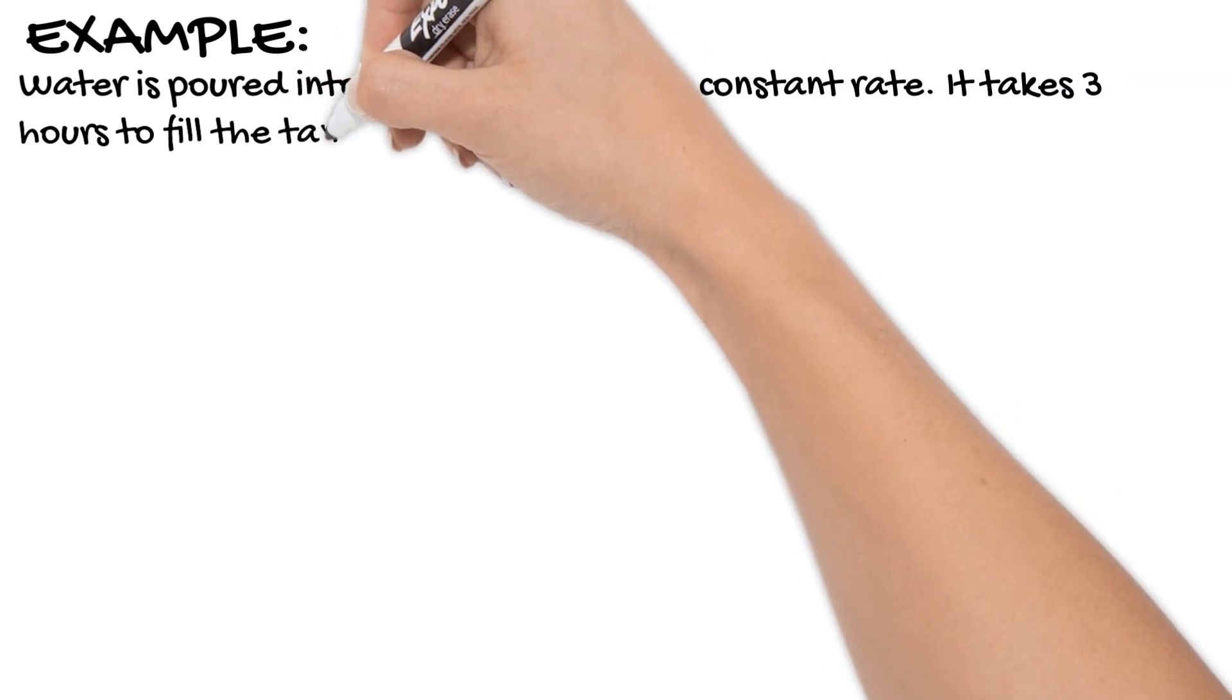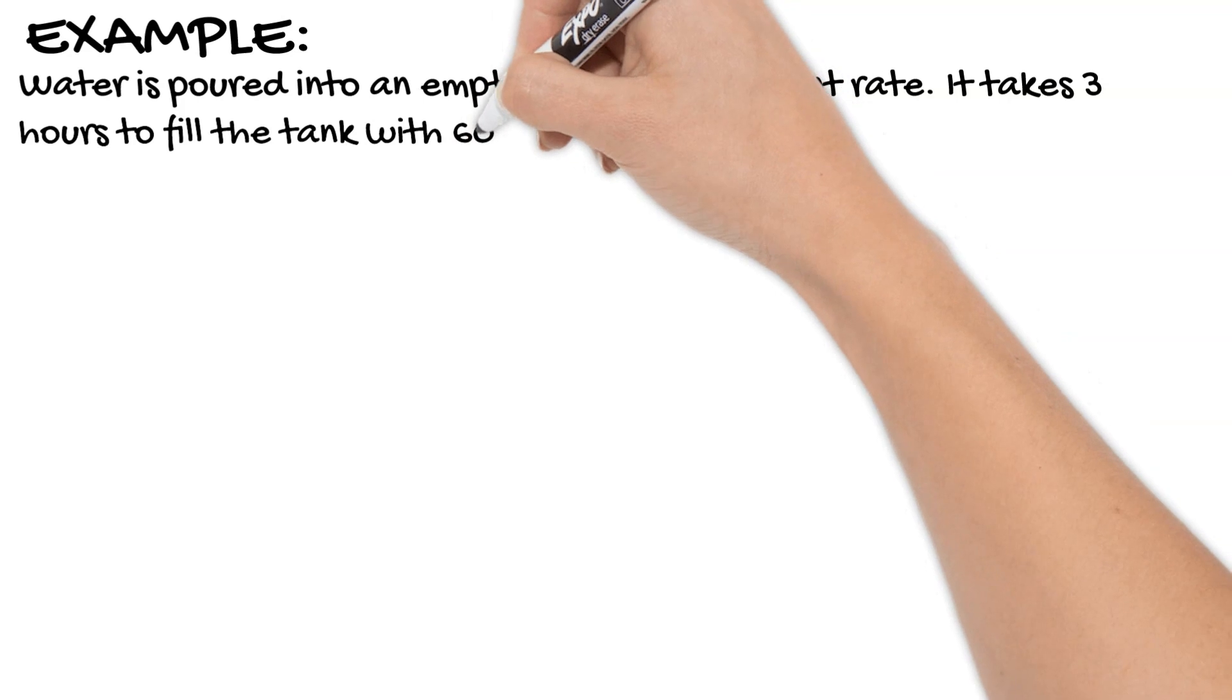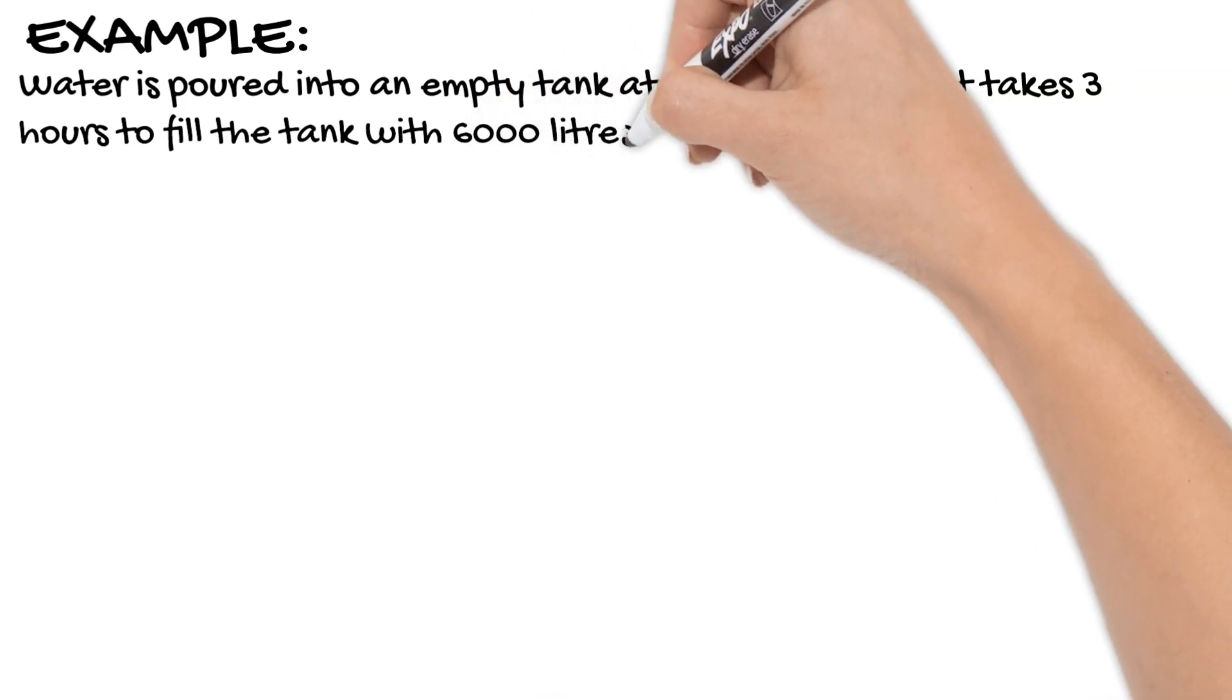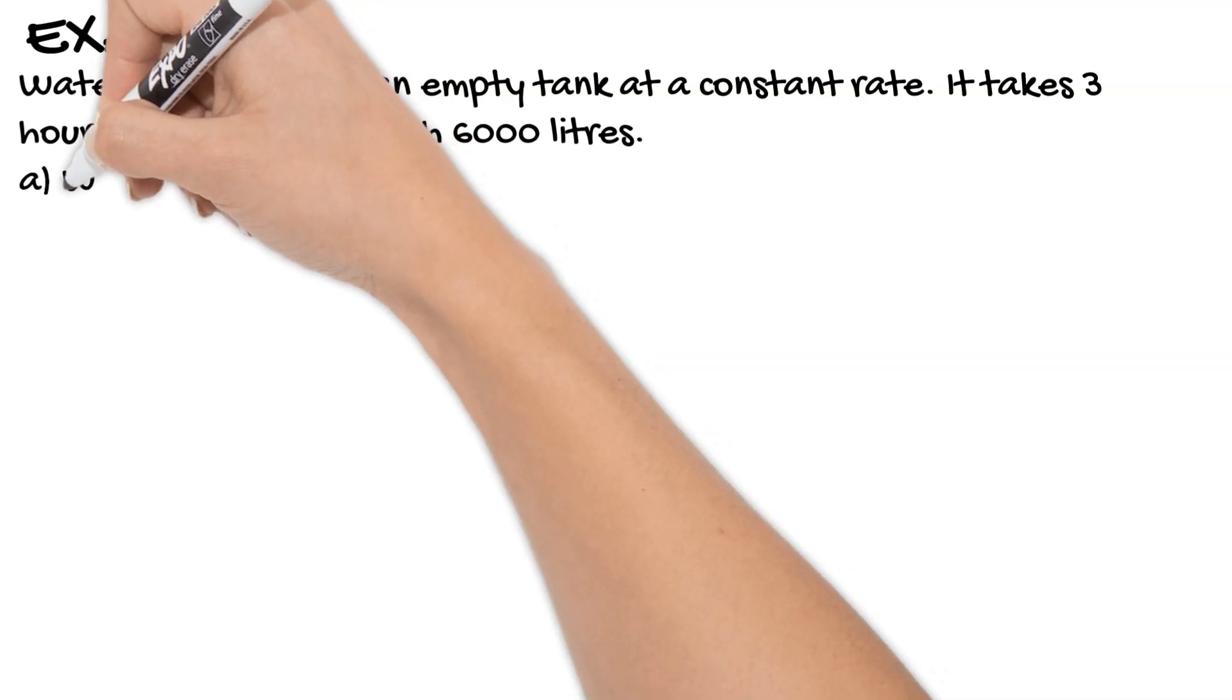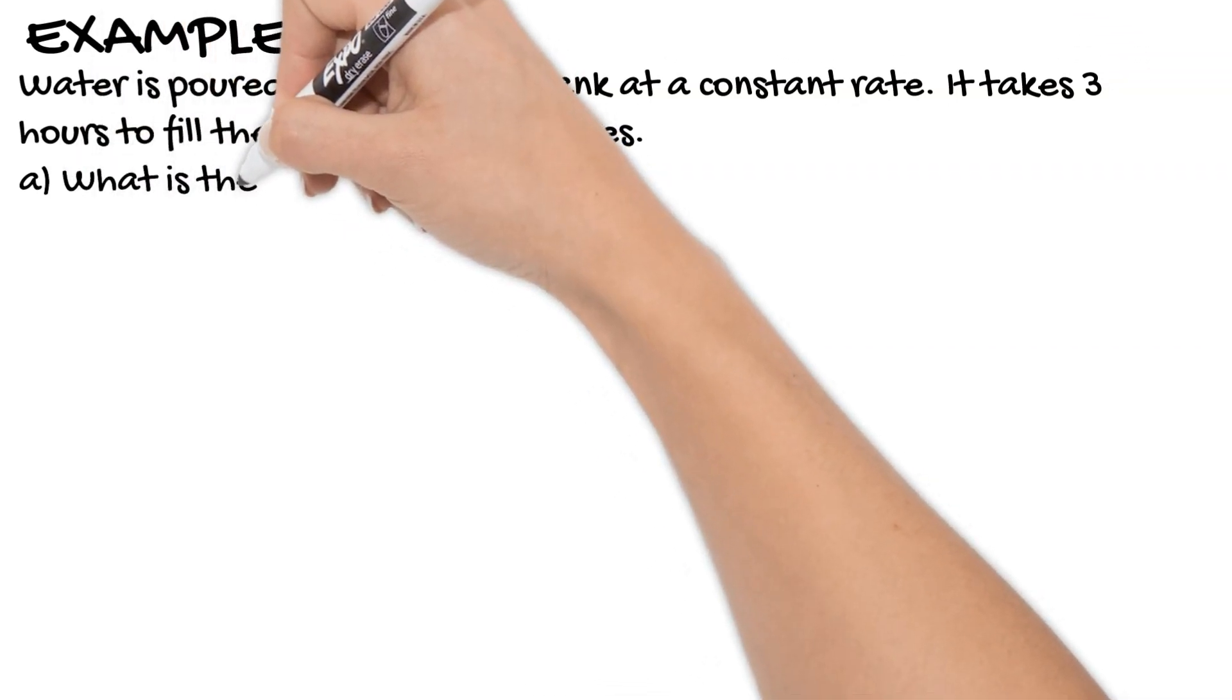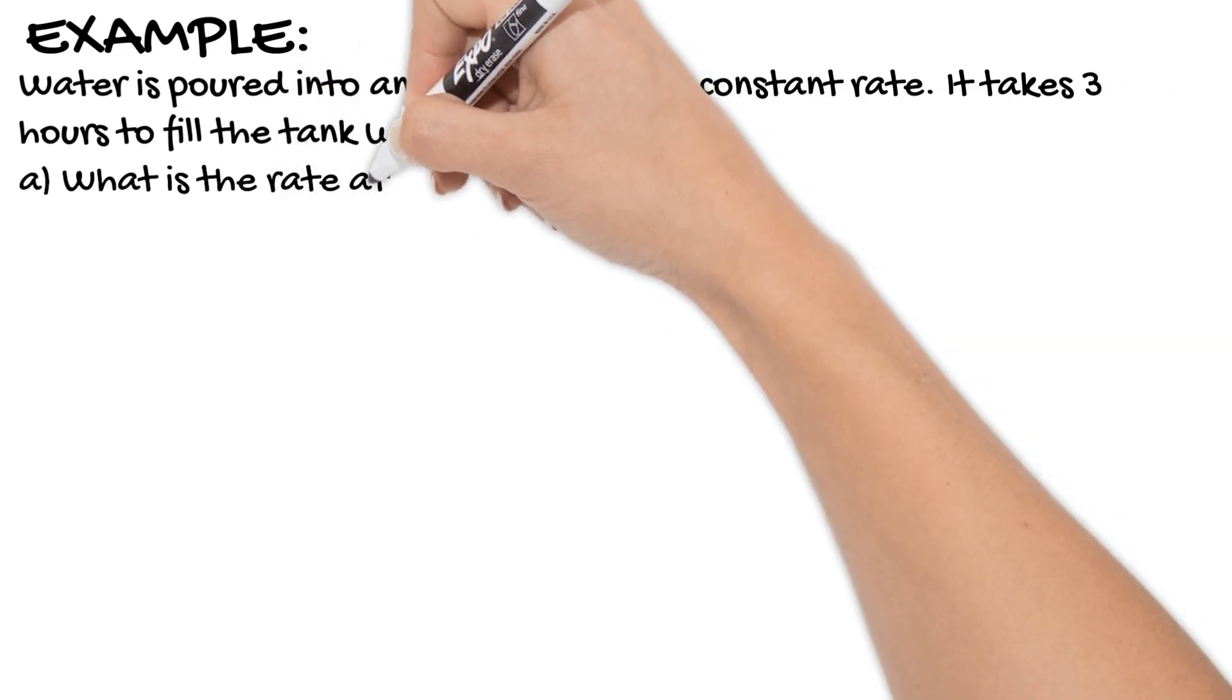So we want to know what is the rate at which the water is poured into the tank. So if it takes three hours to fill the tank with 6,000 litres, to get that as a rate we want to know how many litres per hour. So we simply divide the litres by the hours, which in this case is 6,000 divided by three, which gives us a rate of 2,000 litres per hour.